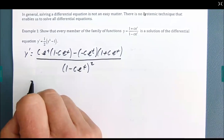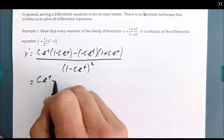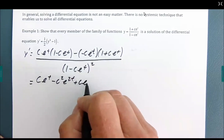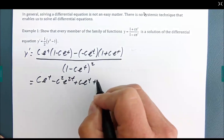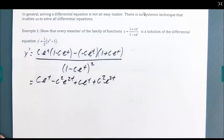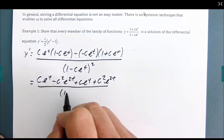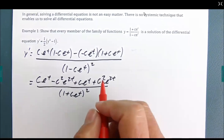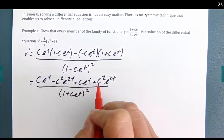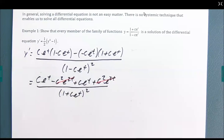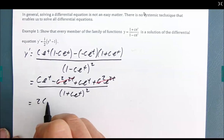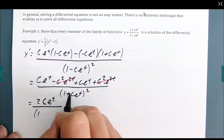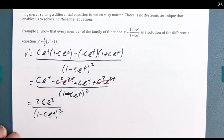Let's clean that up. Applying the distributive property on top, the c²·e^(2t) terms — one negative and one positive — cancel out, and we end up with two remaining terms. That gives a minus c·e^t squared in the denominator. That's the left-hand side.